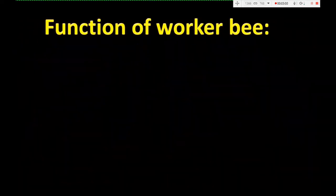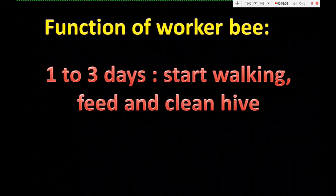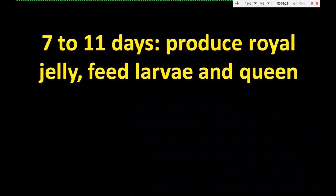Function of worker bee: in different stages, the worker performs different work. After one to three days of emerging, it starts walking, feeding, and cleaning the hive. From four to six days, it feeds other larvae and itself. From seven to eleven days, it produces royal jelly and feeds larvae and the queen with royal jelly.